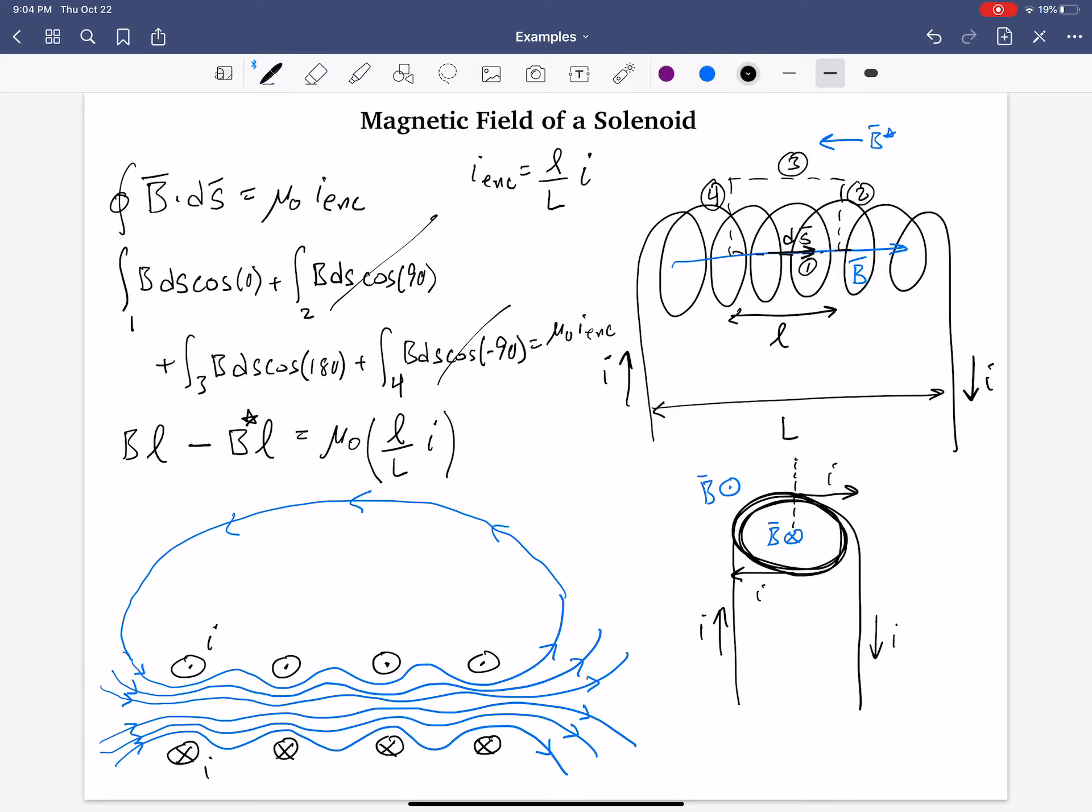And so, what we can say is that the magnetic field strength is pretty close to zero out there. Right? Outside the solenoid, compared to inside, the field strength is practically zero. So that's why this term here is practically zero.